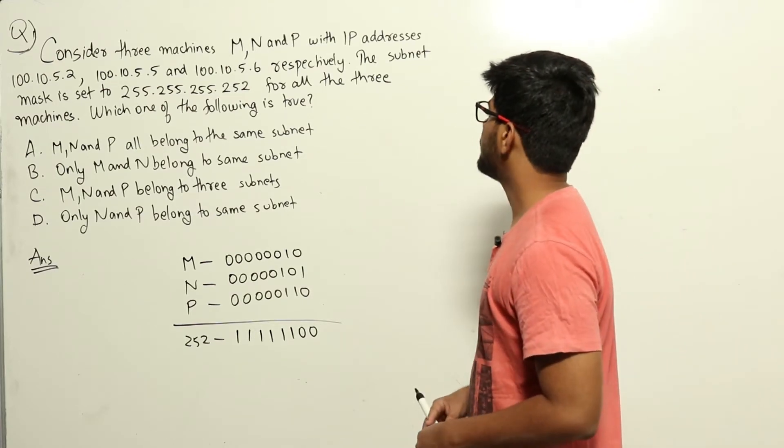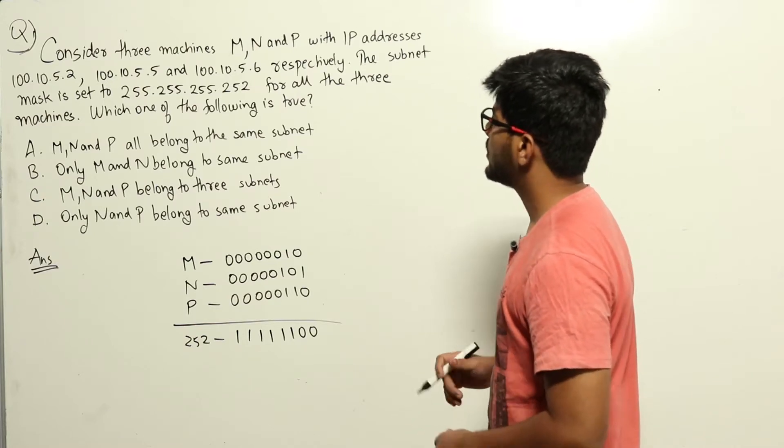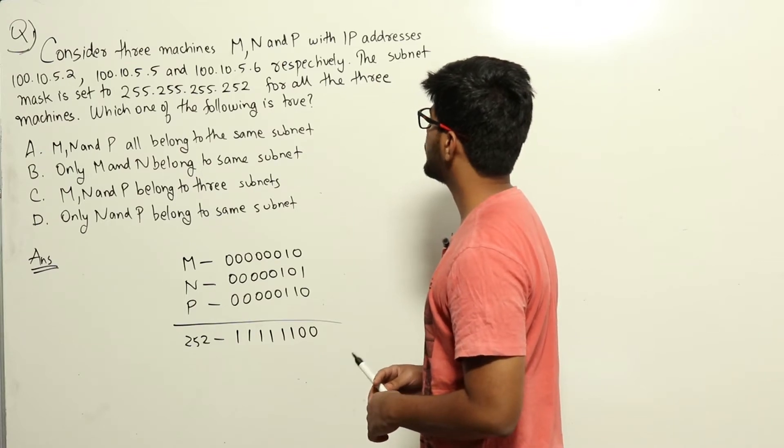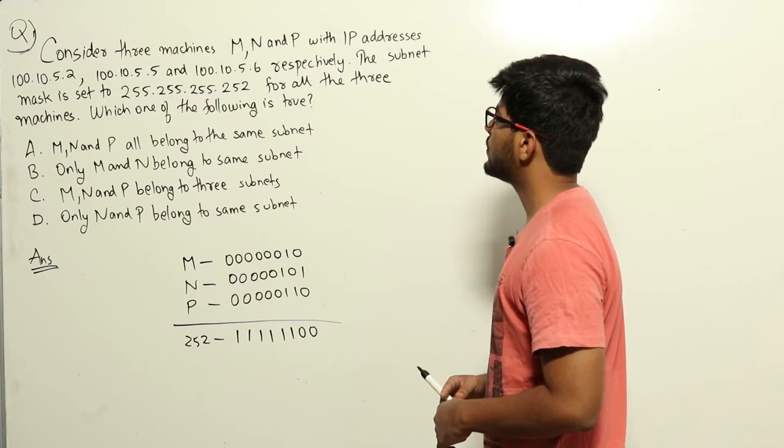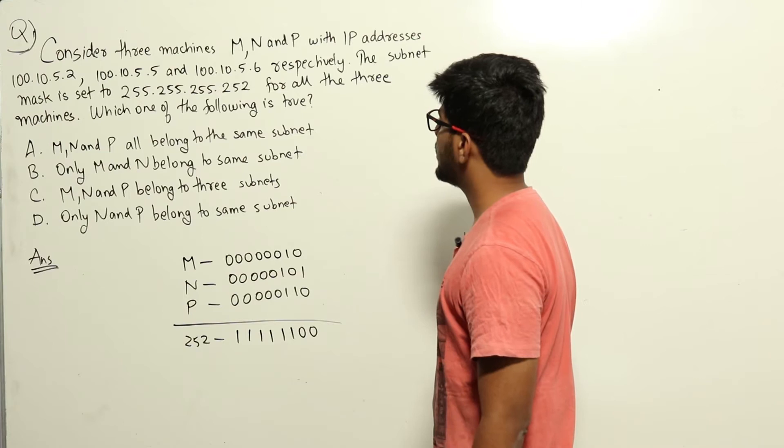Consider three machines M, N and P with IP addresses 100.10.5.2, 100.10.5.5 and 100.10.5.6 respectively. The subnet mask is set to 255.255.255.252 for all three machines. Which of the following is true?